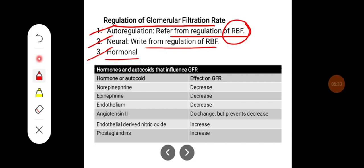Regarding hormonal influence, norepinephrine decreases GFR, epinephrine decreases GFR, and endothelin decreases GFR. Angiotensin 2 may not change GFR significantly but prevents its decrease. Endothelial-derived nitric oxide increases GFR.